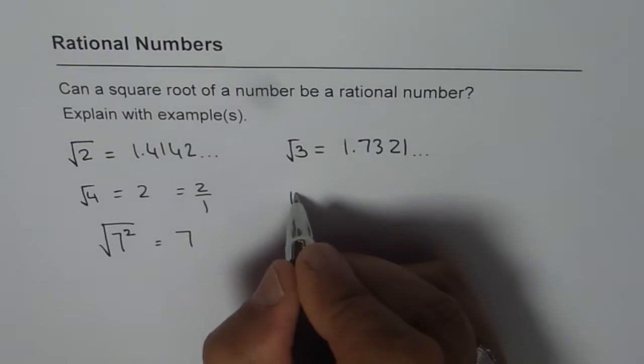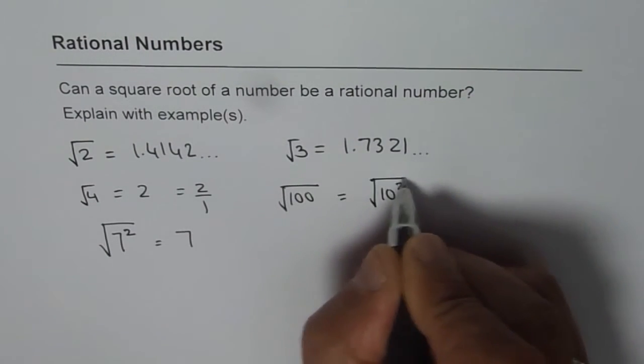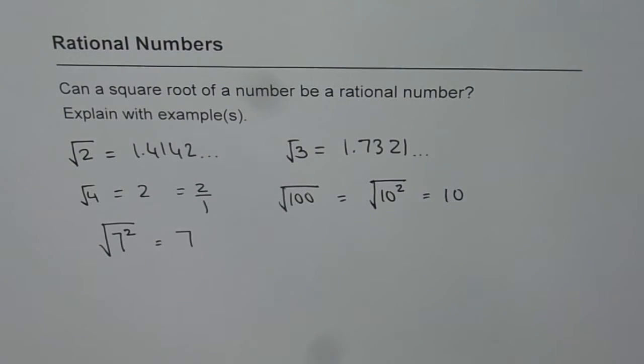For example, 100 square root, which is 10 square root, and that is number 10, and 10 we know is a rational number.